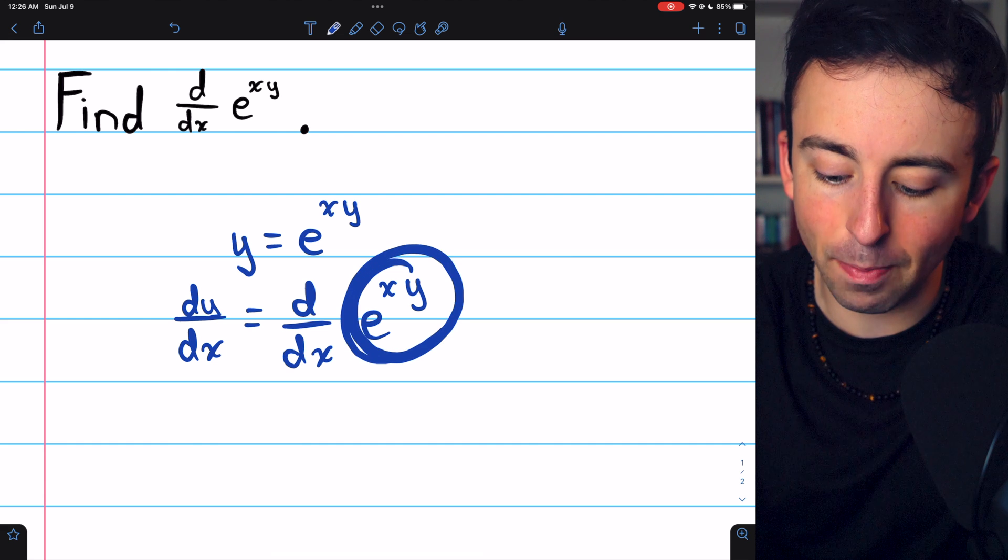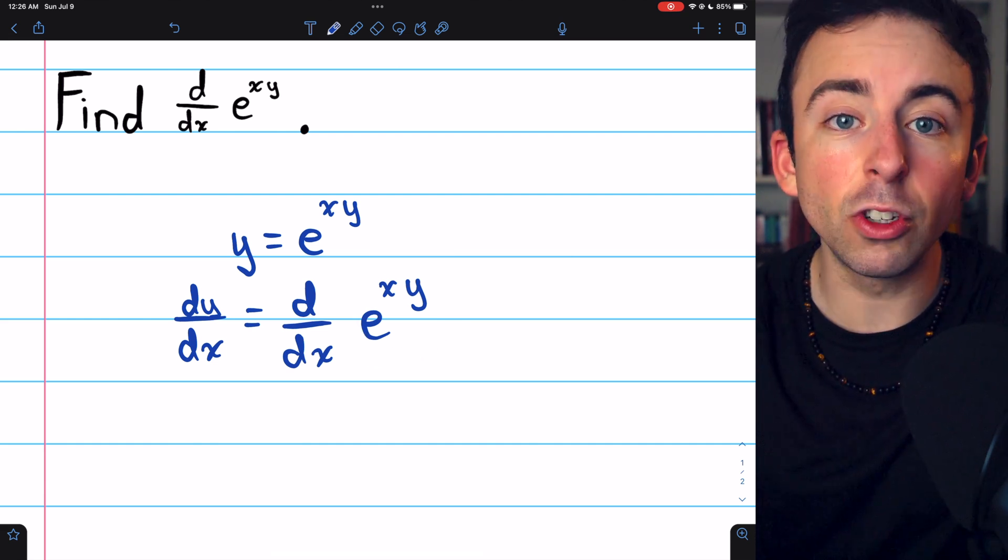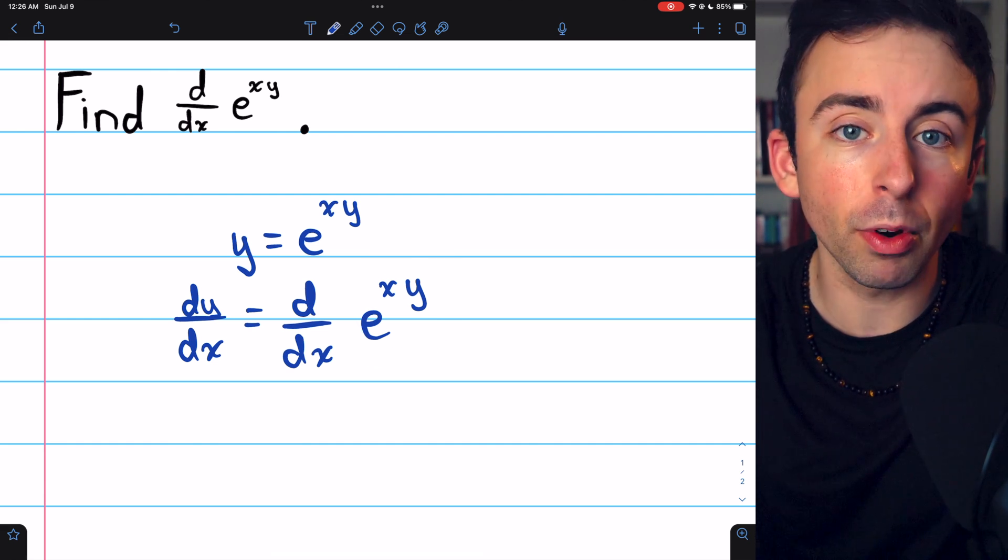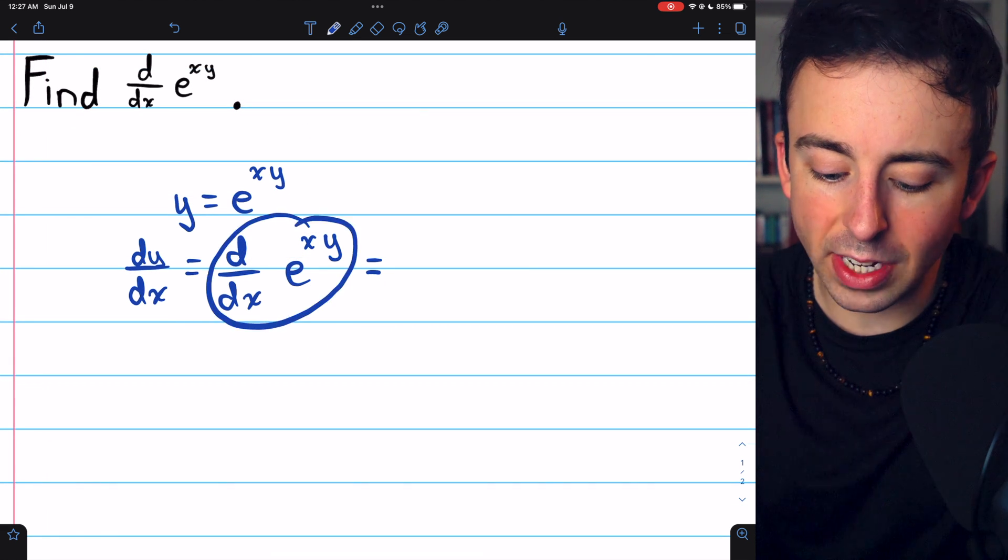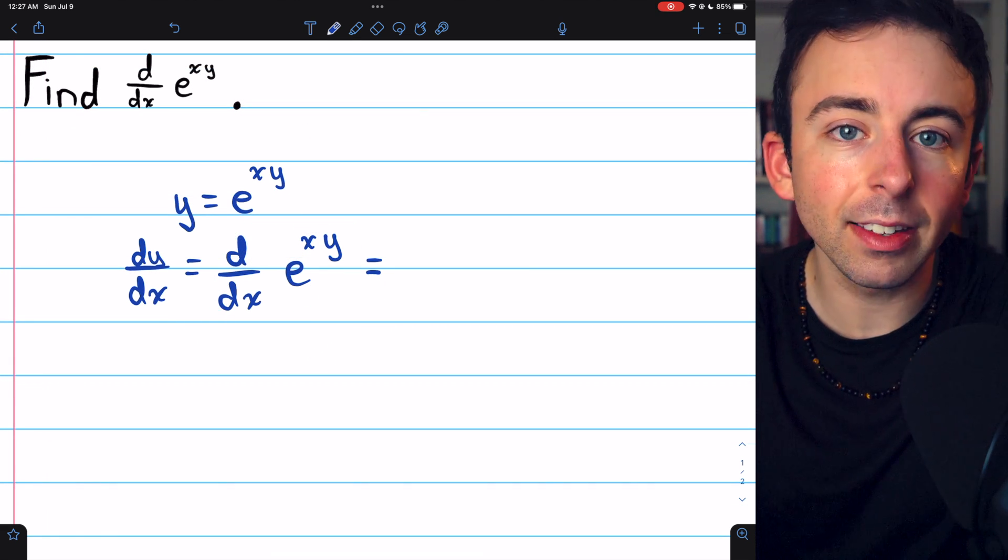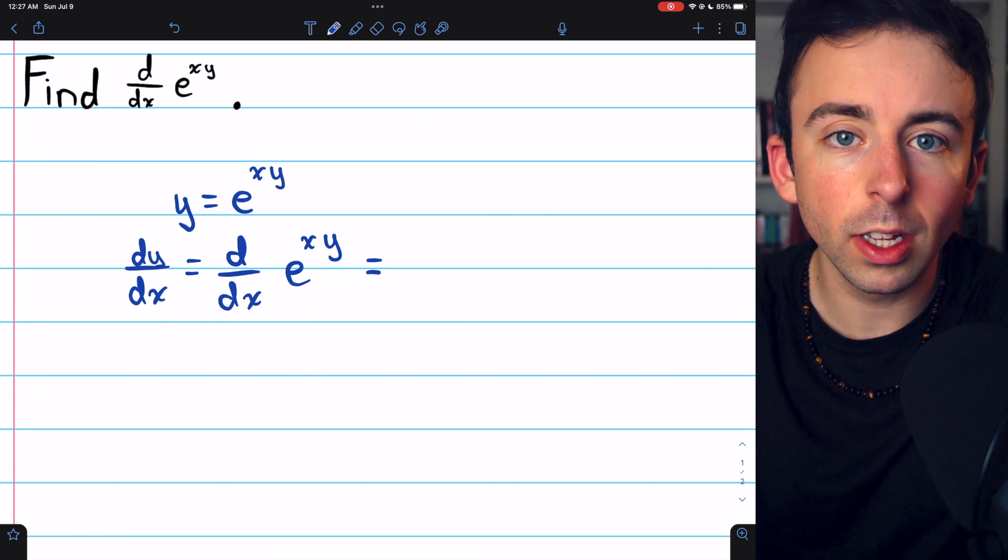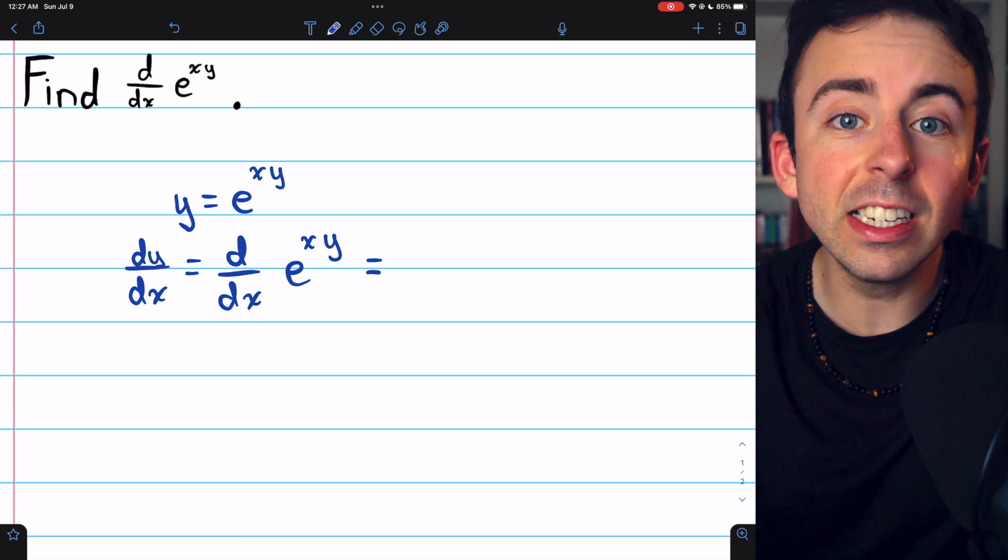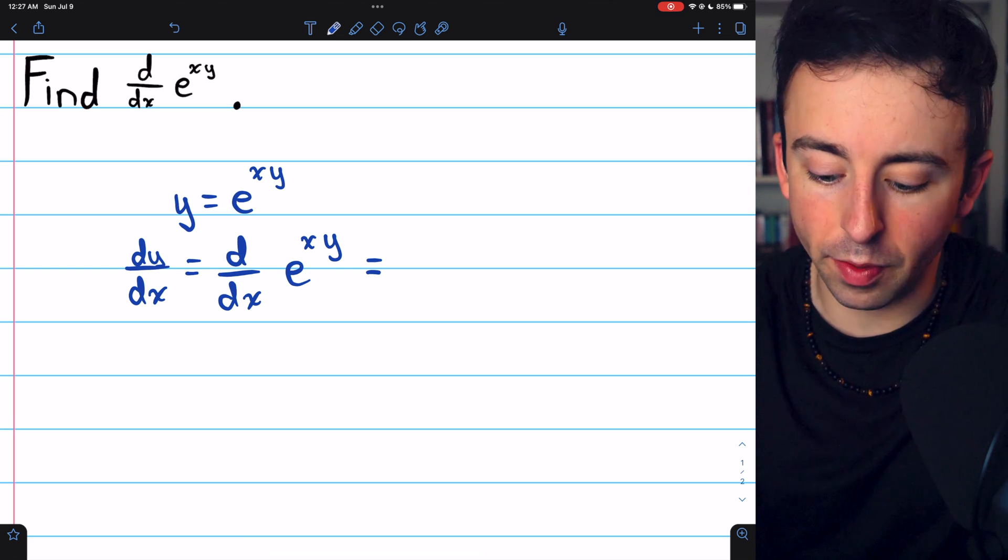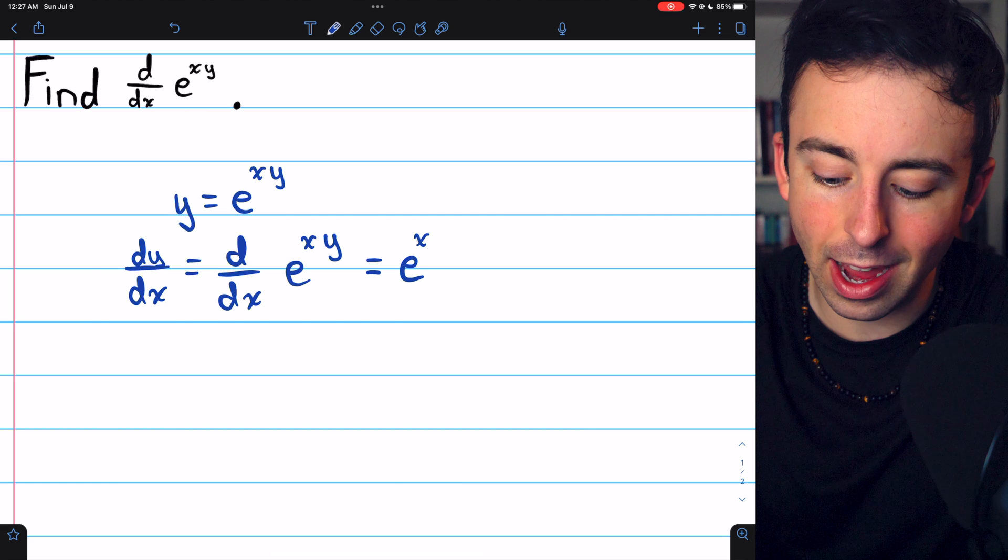Now you have to understand this is a composite function. It's e to the power of a product xy. So to take the derivative of e to the xy with respect to x, we need to use the chain rule. The outside function is e to a thing, and the derivative of e to a thing is just e to that thing.